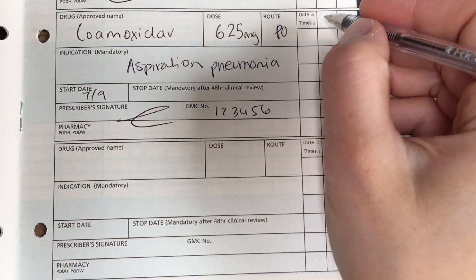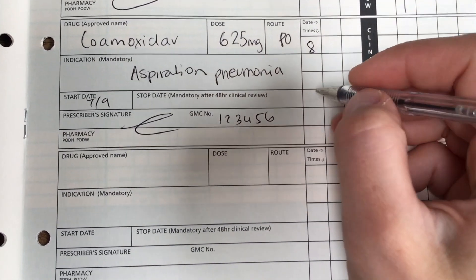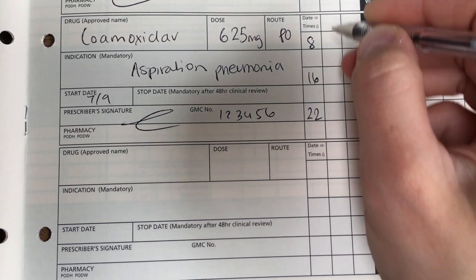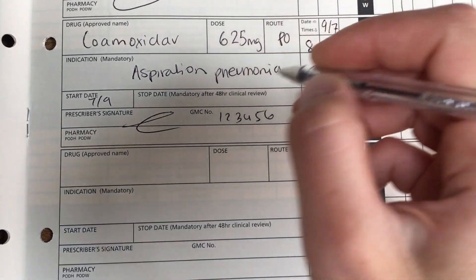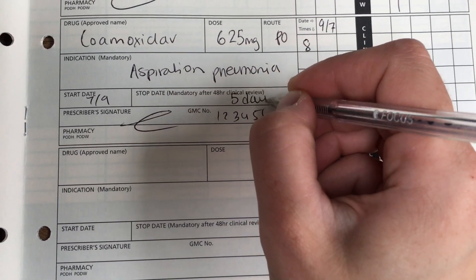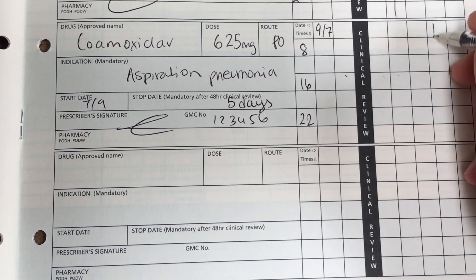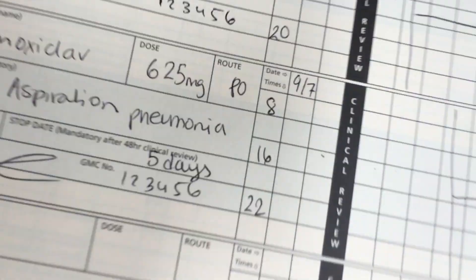The next one that I want to show you is Co-amoxiclav, 625 milligrams oral. So, the dose here is three times a day, and again, you write the indication, put your GMC number and sign, a start date, and a stop date. So, for me, I've put review, well, I've put stop after five days, and I've crossed off the rest of the drug chart.